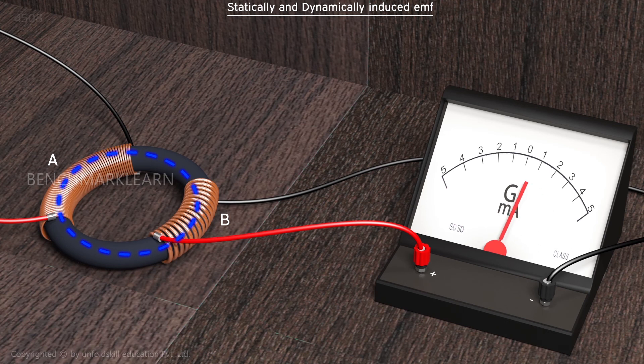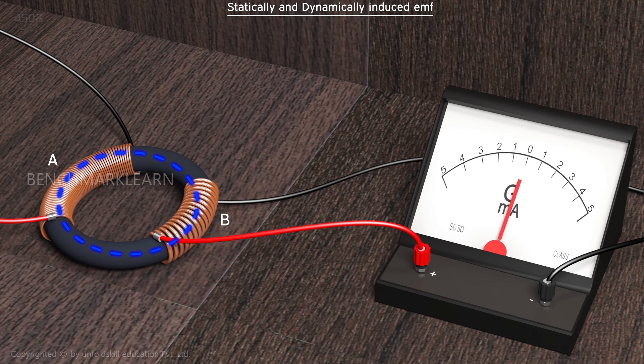The magnetic flux generated by coil A changes direction as it is produced by an AC current. So, the EMF generated across the coil B and the current through it also changes direction with the same frequency as the AC source. That is the reason why the galvanometer is deflecting in both directions.